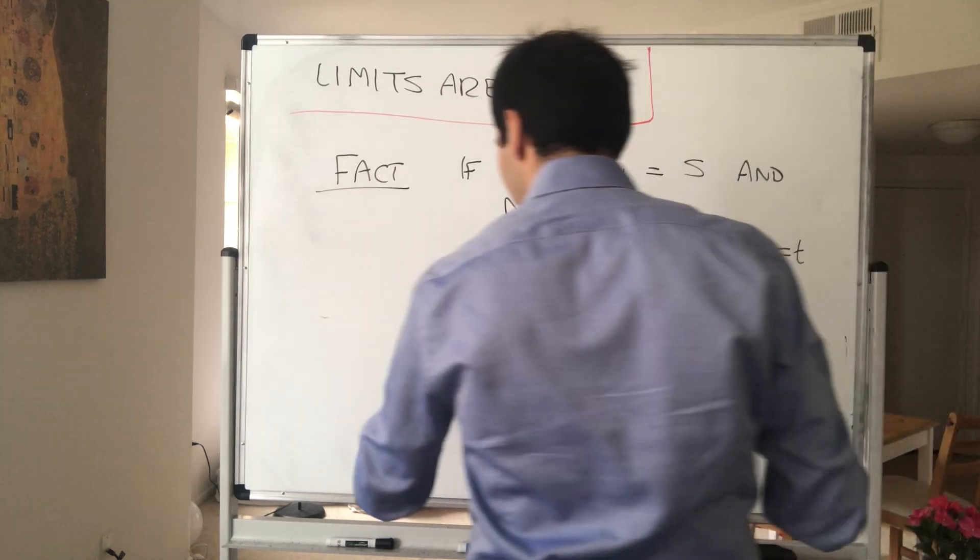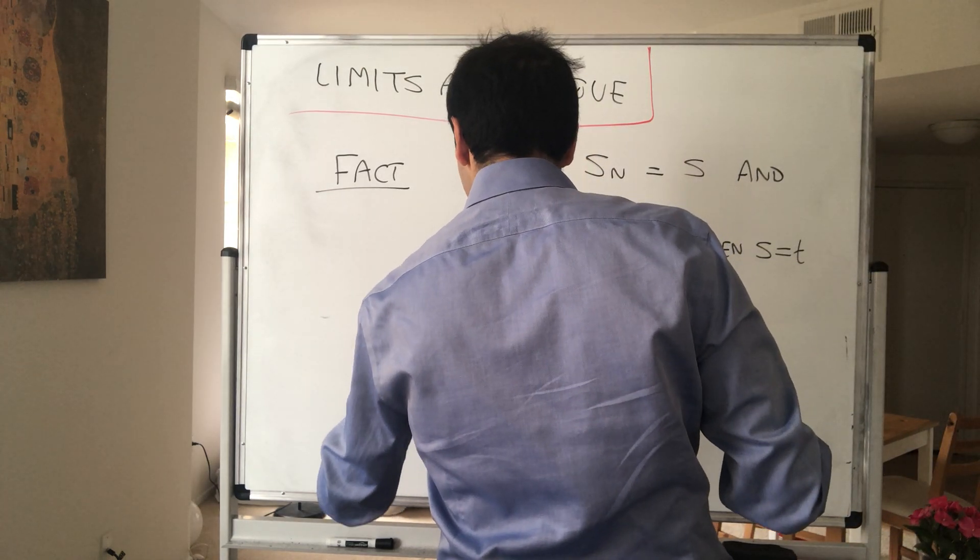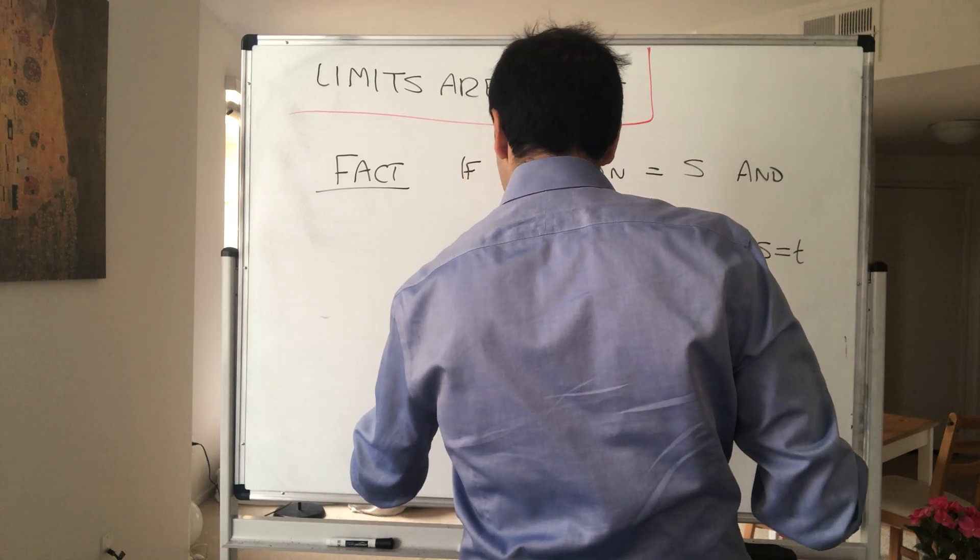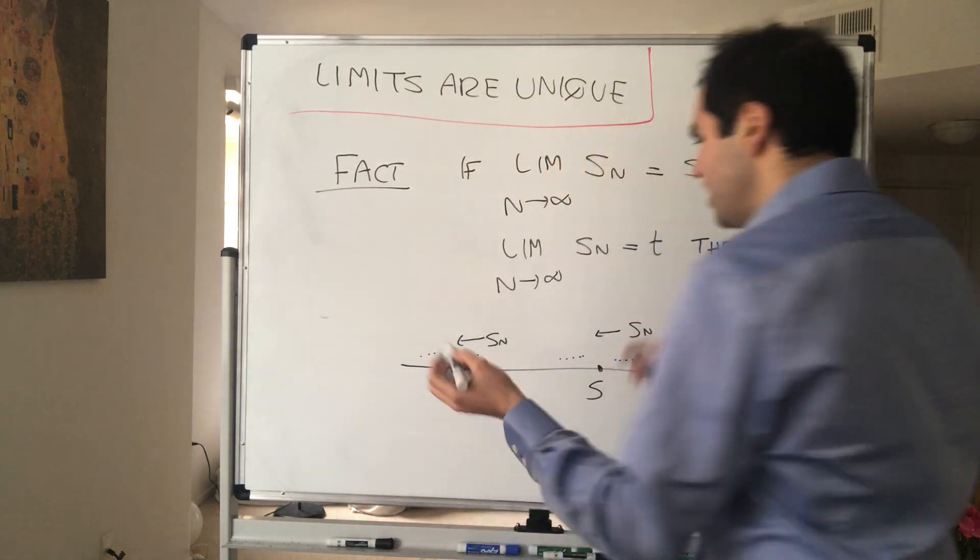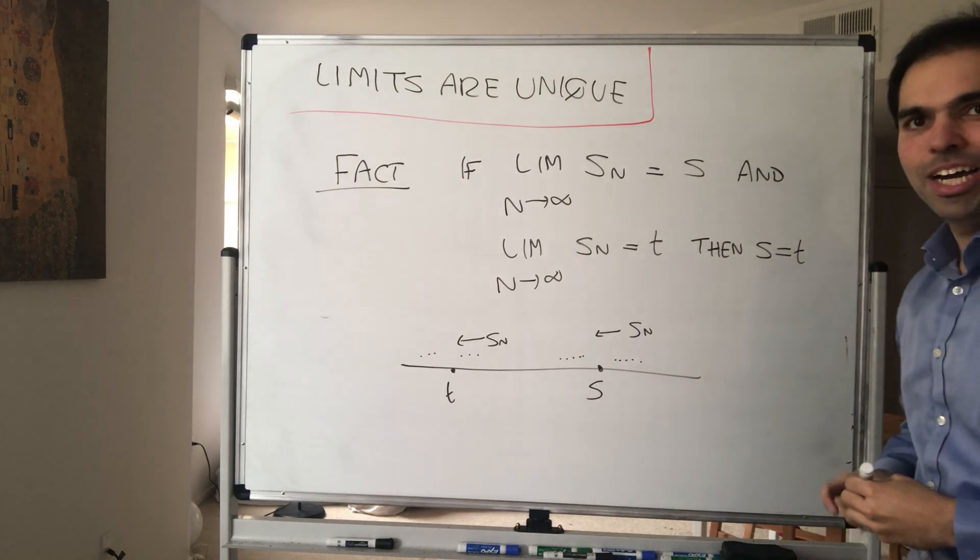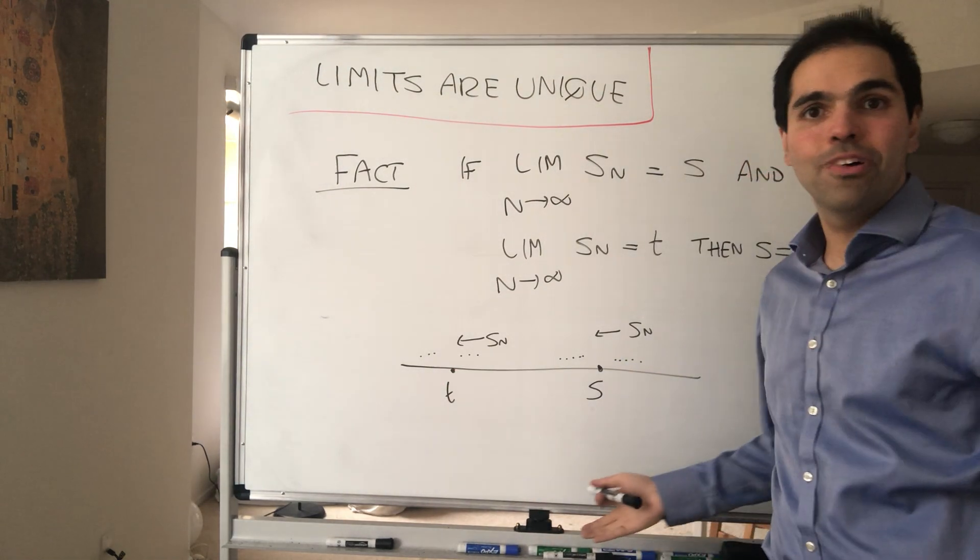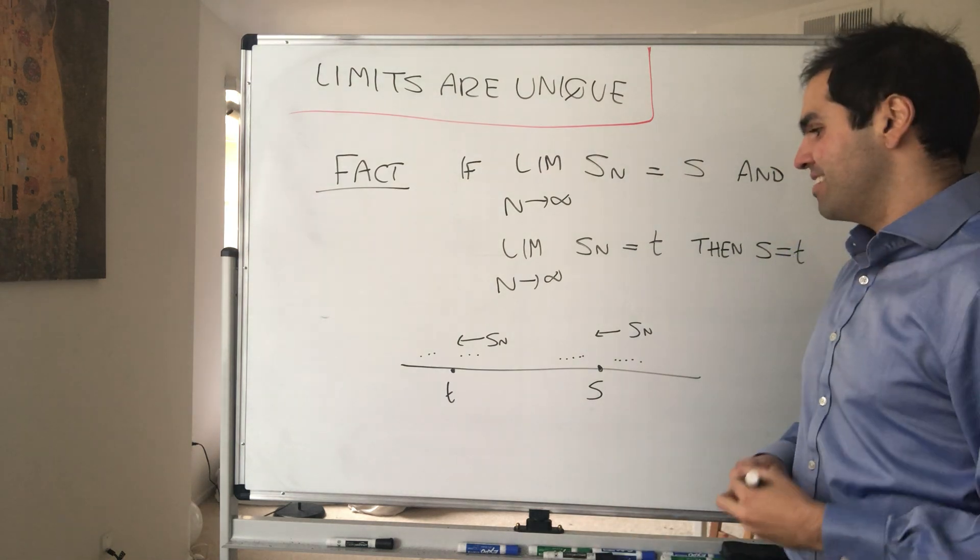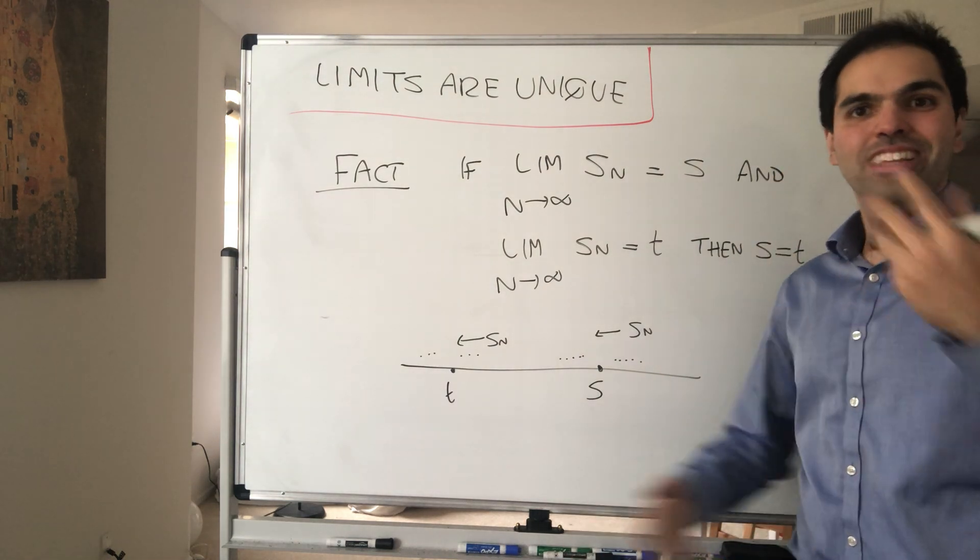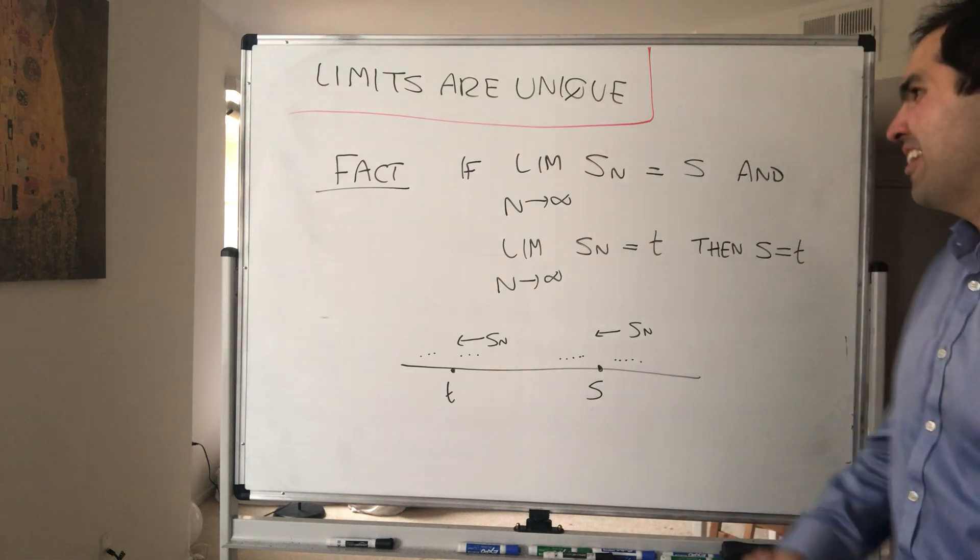So how can it do both at the same time? How can Sn go both to this number and this number at the same time? It doesn't make sense unless you have like multitrack drifting, which is not part of this course.